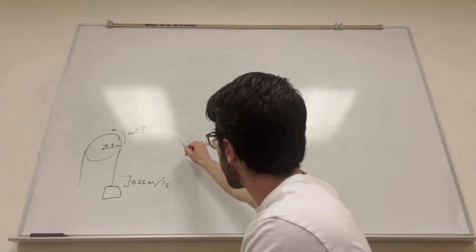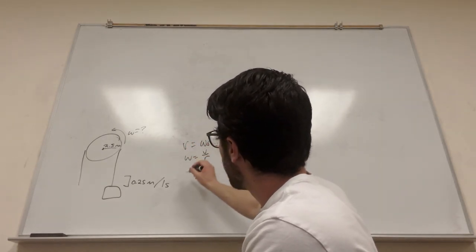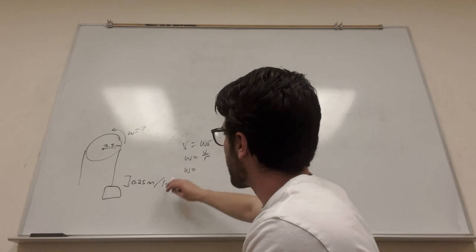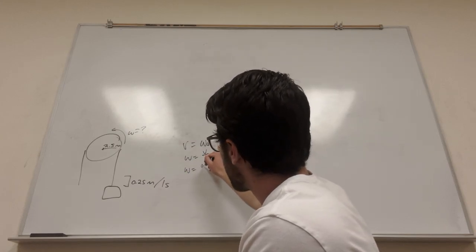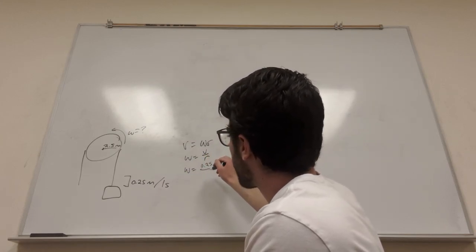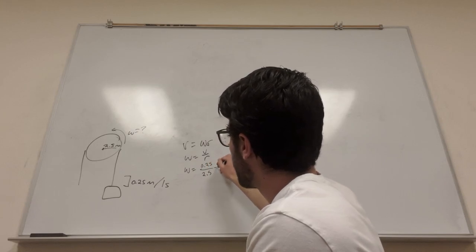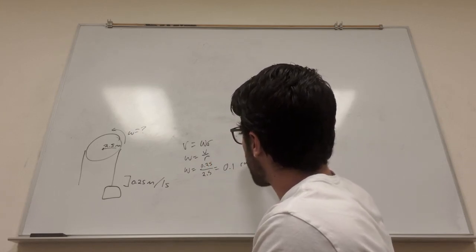So what we're going to do is we're going to say W is equal to velocity divided by radius. And then we can say W is equal to the velocity, which is 0.25 divided by radius, which is 2.5. That's equal to 0.1 radians a second.